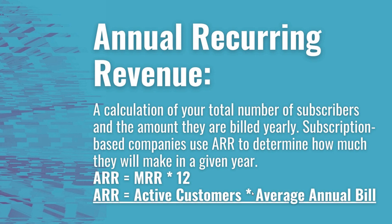You can use active customers times the average annual bill — come up with the average amount all your subscribers will pay annually — or, as most people do, just take your Monthly Recurring Revenue from the previous month and multiply it by 12. You can also use the quarterly figure to get a slightly better estimation of your annual recurring revenue.